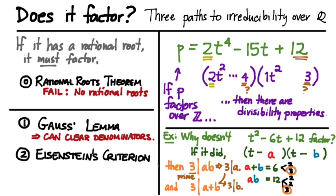So in this example, it's not possible for 3 to be a factor of only one of a or b — because it divides both the sum and the product, it has to be a factor of both. So both a and b are multiples of 3. But that means a times b would have to be a multiple of 9. In this example, a times b equals 12, and that's absurd — it's not possible. So the divisibility criteria for Eisenstein's Criterion have to do with whether coefficients are divisible by a prime, but whether the constant term is divisible by the square of that prime.